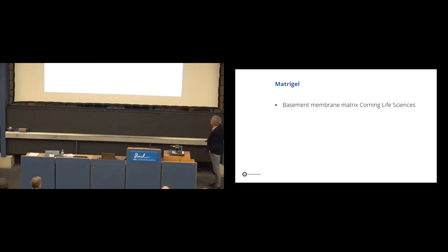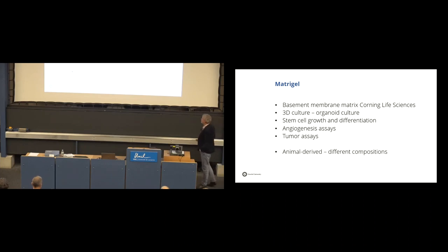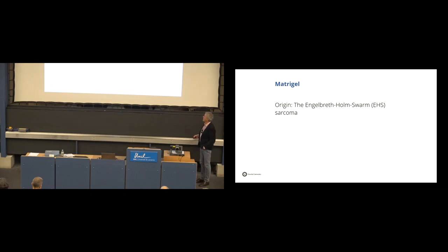It's a basement membrane matrix produced by Corning Life Sciences. And it's used for 3D culture of organoid culture, stem cell growth and differentiation, angiogenesis assays, tumor assays, and a lot more assays. But this is animal-derived, and it may have different compositions. And may contain also xenobiotic contaminants and growth factors.